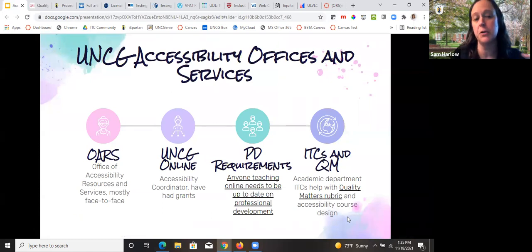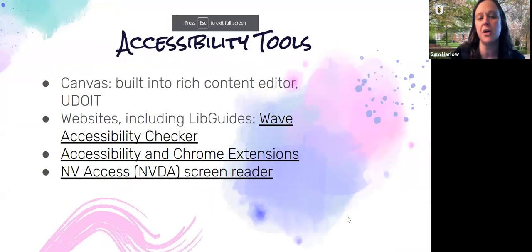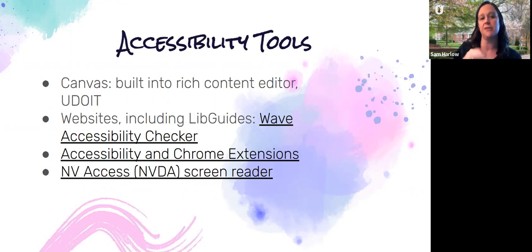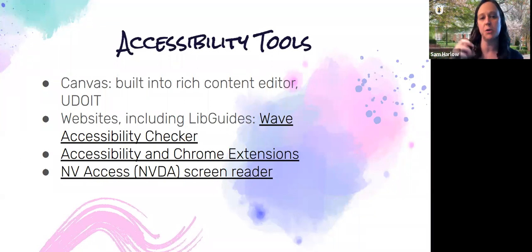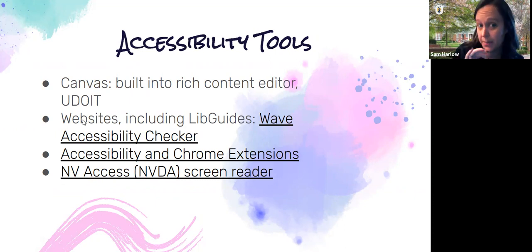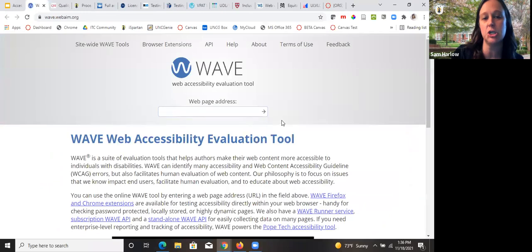Here are some free tools I've found really useful. Canvas has a built-in accessibility checker within the rich content editor — you just push a button and it goes through your pages and tells you what's accessible and what's not. Google Slides has a similar add-on called Grackle Slides if you want to check your Google Slides for accessibility. And what I usually use for websites — which works on Google Sites and LibGuides — is the Wave Accessibility Checker, where you throw in a web page and it shows you what's going on.